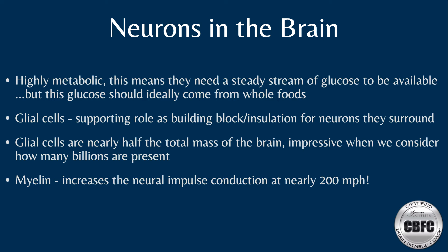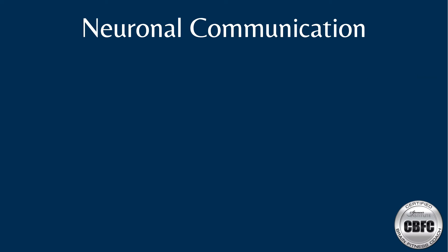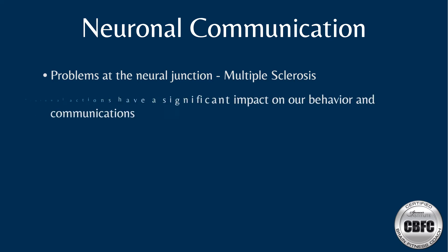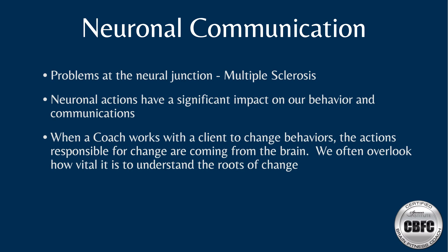Myelin is a lipid that serves to protect and insulate the axons in the brain, increasing the speed of neural impulse conduction to an impressive 200 miles per hour. Multiple sclerosis (MS) is caused by the loss of this protective myelin sheath around neurons, which significantly impairs neuronal communications. As a coach helping a client through behavior change, it's useful to know that rewiring neuronal communication is how we can achieve goals.